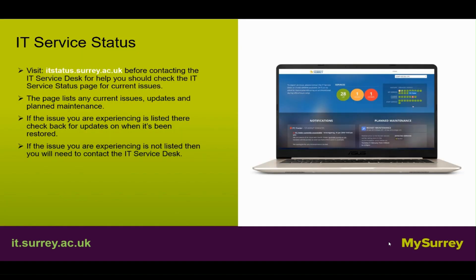Visit itstatus.surrey.ac.uk before contacting the IT service desk for help. You should check the IT service status page first for current issues. The page lists any current issues, updates and planned maintenance. If the issue you are experiencing is listed, check back for updates on when it will be restored. If the issue is not listed, you will need to contact the IT service desk.